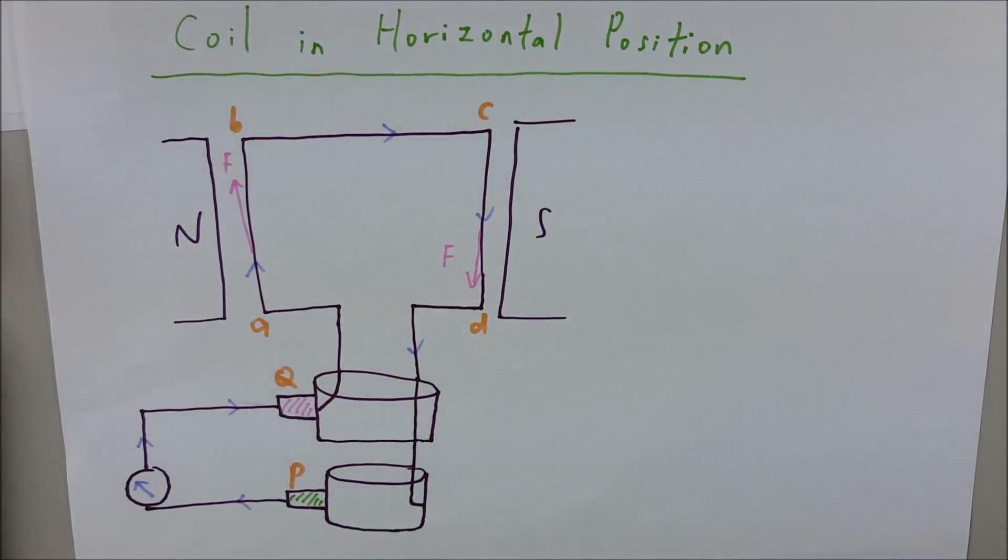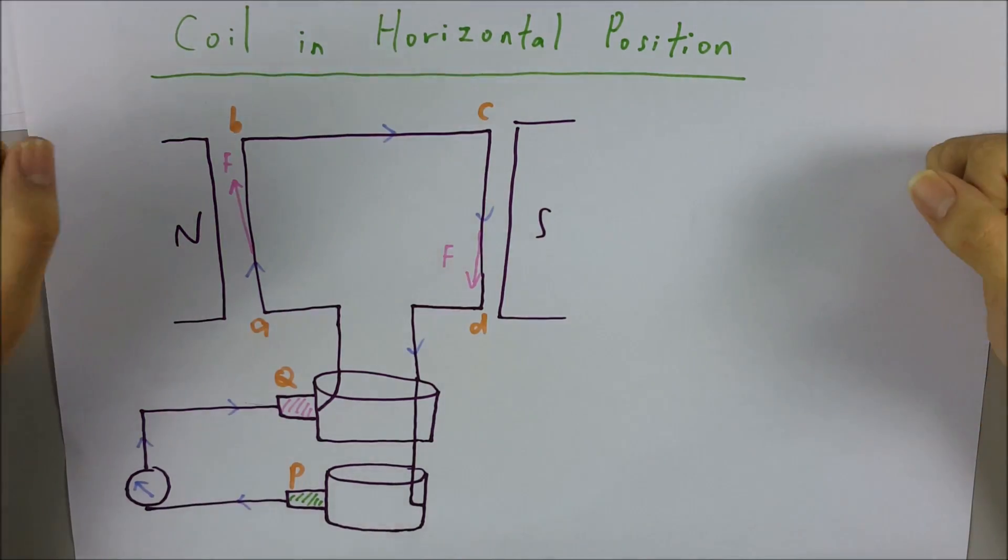Okay, so now I will be explaining the operating principle of an alternating current generator, which is also known as an AC dynamo.